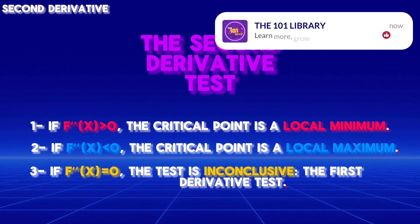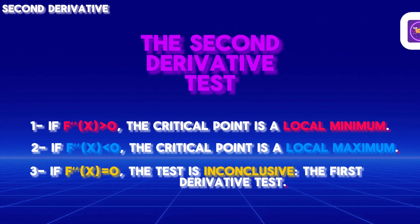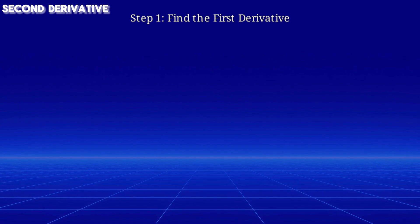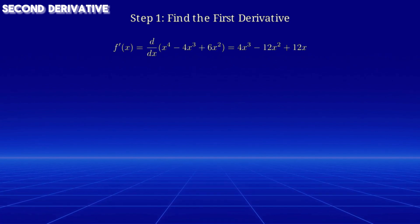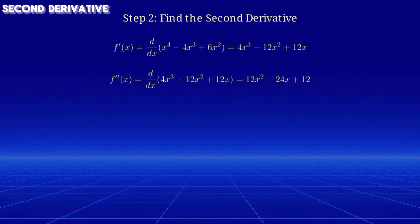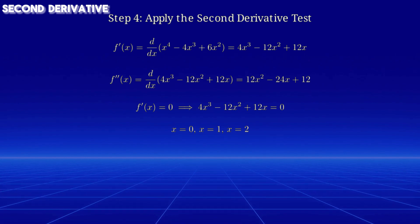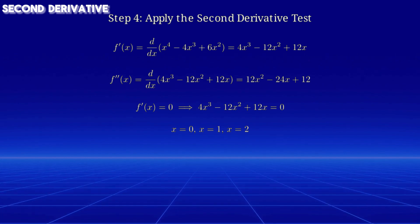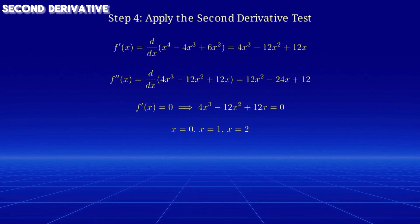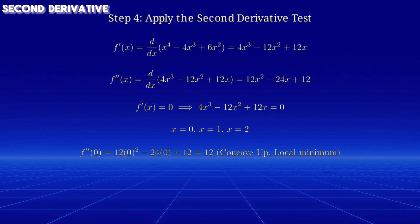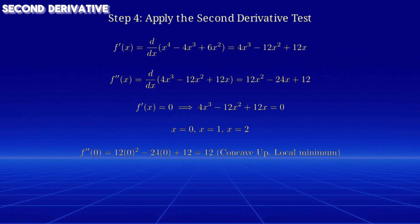Let's work through a detailed example to demonstrate the application of the second derivative. Consider the function on the screen. The first step is to find the first derivative, after which we find the second derivative. Then we locate the critical points, which occur where the first derivative of f(x) equals zero. We can then apply the second derivative test at each critical point to determine the concavity and classify them. For instance, at x equals zero, the second derivative is greater than zero, which means the graph is concave up at x equals zero, indicating a local minimum.